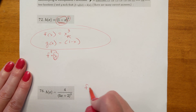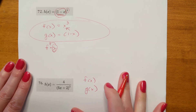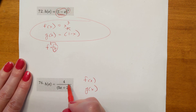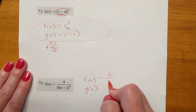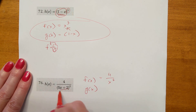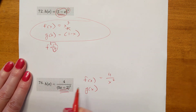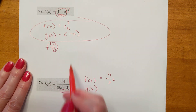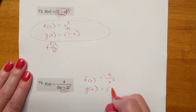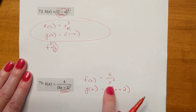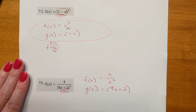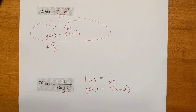Same idea for the next one. The parent function is 4 over x squared, and what's in parentheses is 5x plus 2. Pick that up, plug it into the parentheses, and that gives you 4 over (5x plus 2) squared. So f(x) equals 4 over x squared and g(x) equals 5x plus 2. See you for the next lesson.